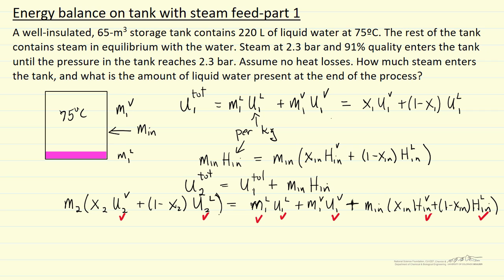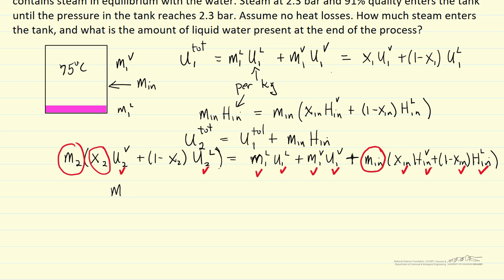We know the initial mass of liquid because we have 220 liters and can look up the specific volume in the steam tables. We also know the initial mass of vapor, since total volume minus liquid volume gives vapor volume. The initial incoming quality is 0.91 — so those values are known. The unknowns are the final mass m2, the mass that came in m_in, and the final quality x2 — three unknowns. But we can eliminate one because the final mass equals initial mass plus mass in, leaving two unknowns.